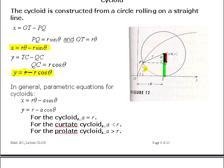These are equations for the cycloid in which the pencil is located on the rim of the moving circle. In general, the equations for the cycloid are given here. x equals r theta minus a sine theta and y is r minus a cosine theta. A is the distance from the center of the circle to the location of the pencil.